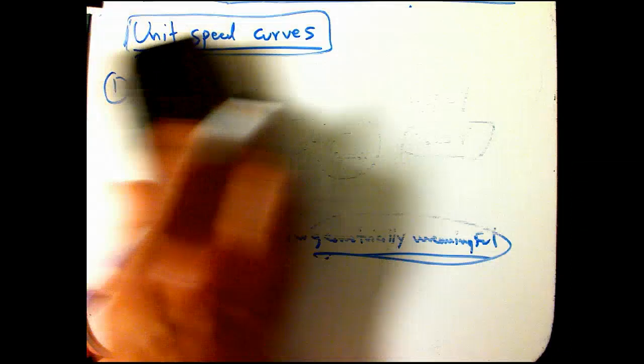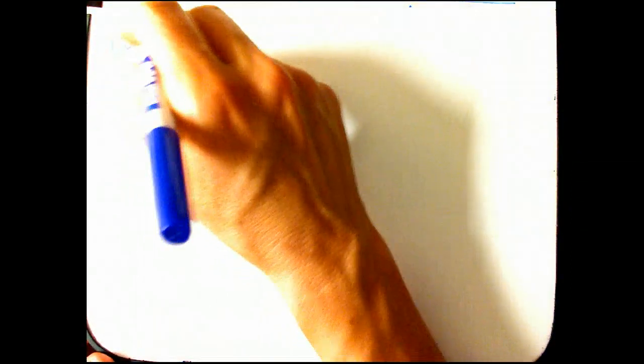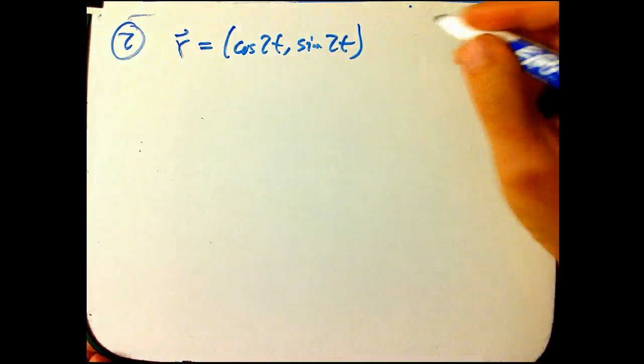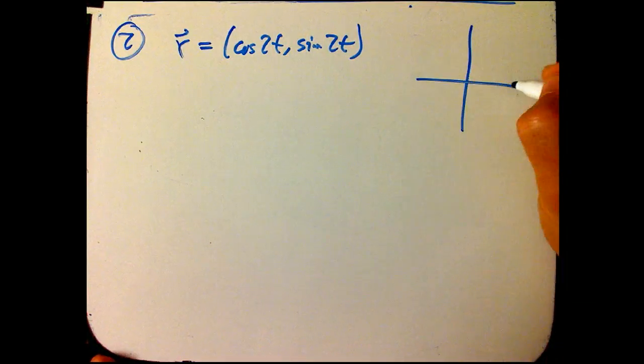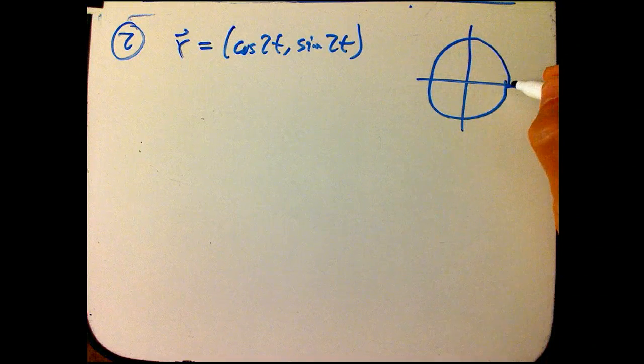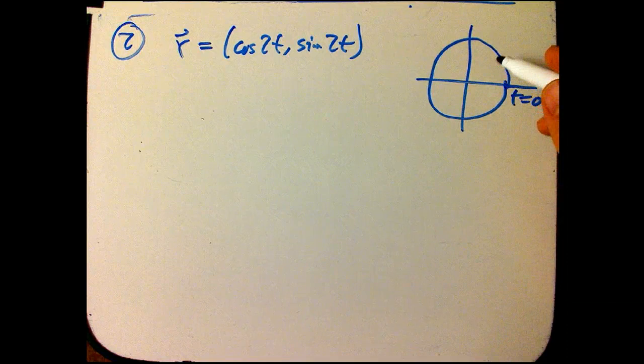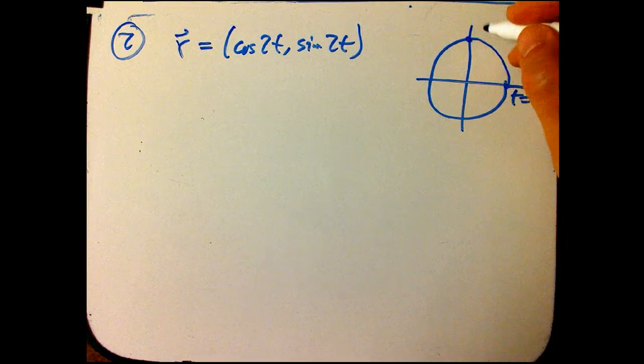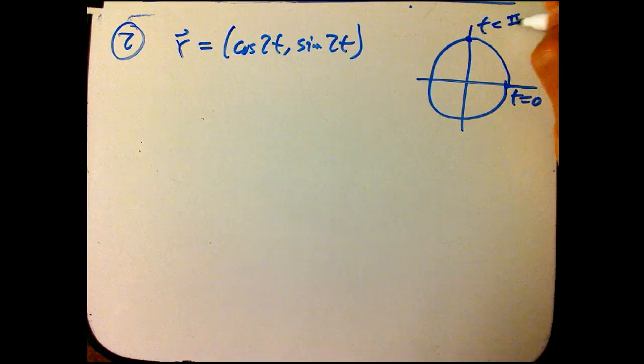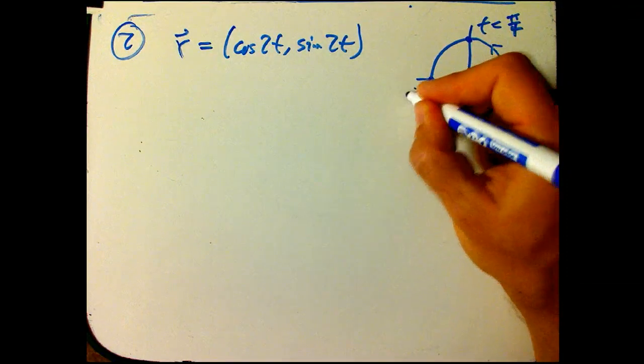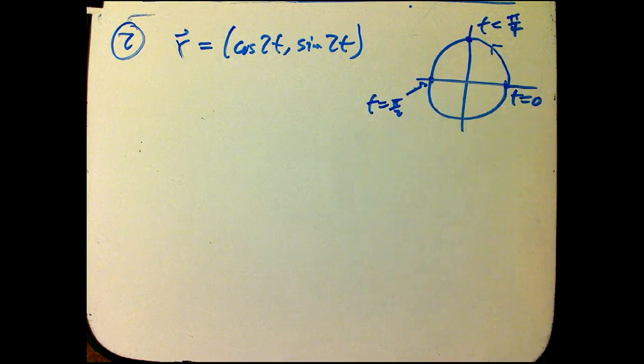So for a contrast, we could look at something that's very similar but not unit speed. And that's going to be r equals cosine 2t, sine 2t. So that's still going around exactly the same curve. Cosine squared plus sine squared is still one. It even starts in the same location. But it's not going to get to the same place at the same time as it did before. Here, to get up here, I actually put in t equals pi over 4. Because then I double it, I get cosine pi over 2, sine pi over 2. Here, it gets to here at t equals pi over 2, etc.